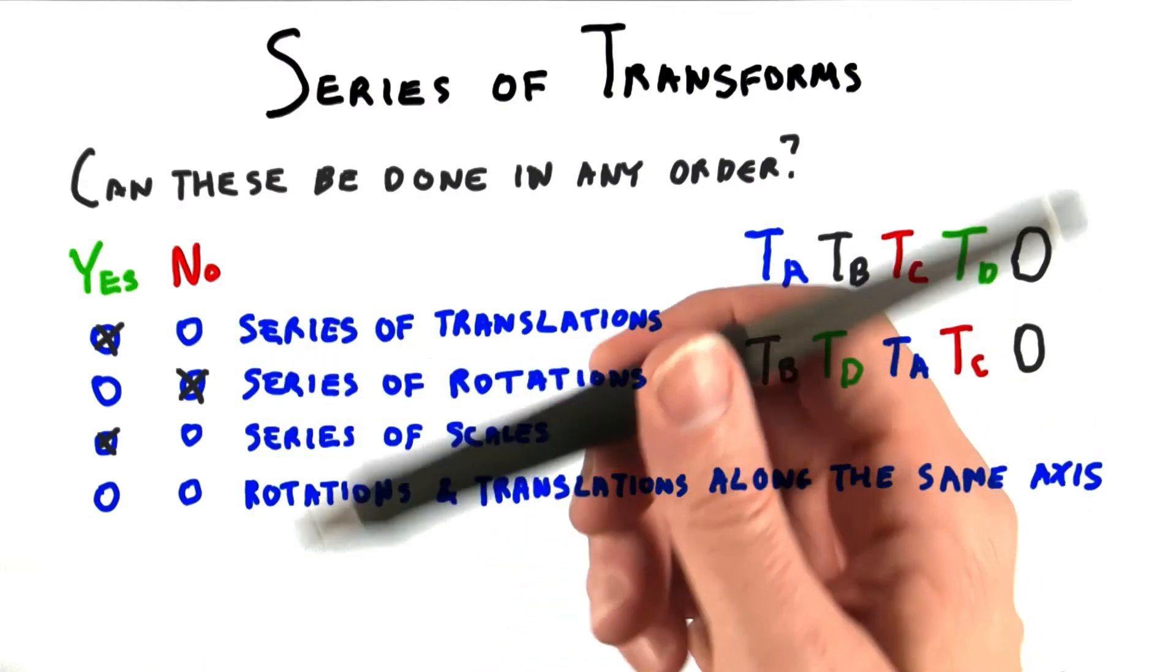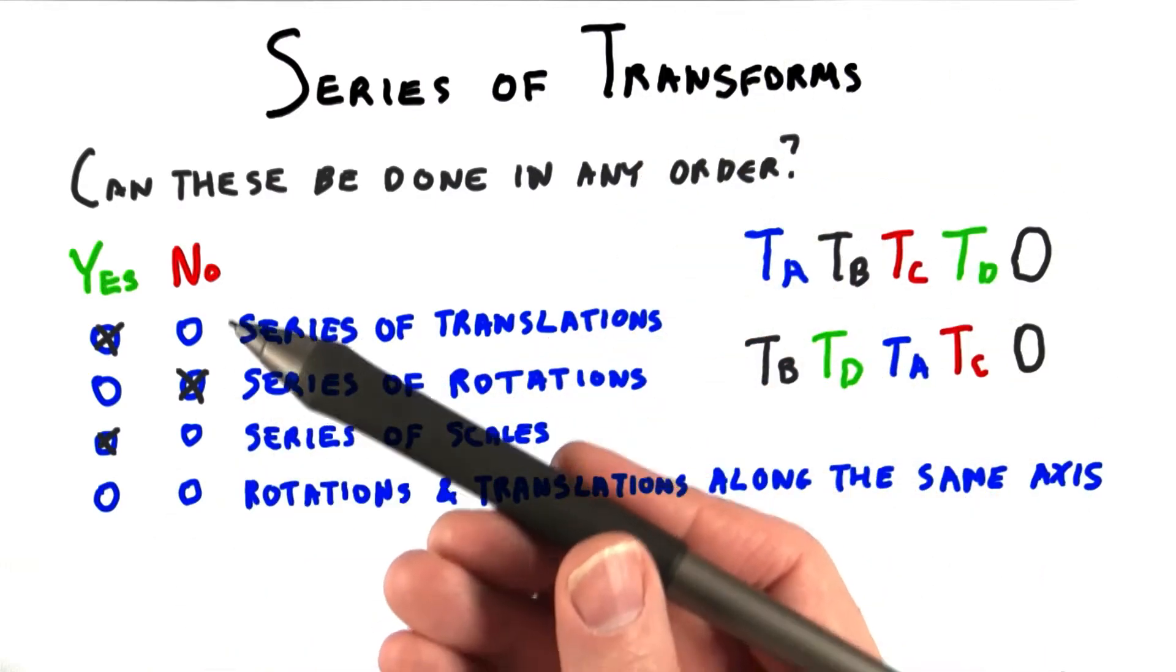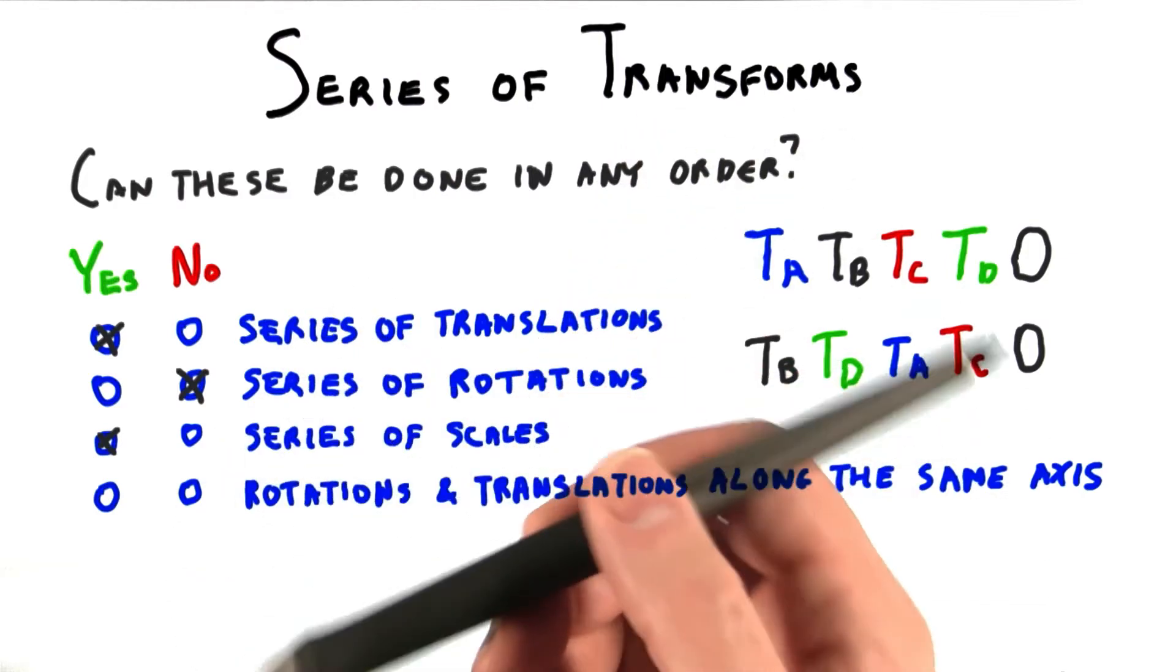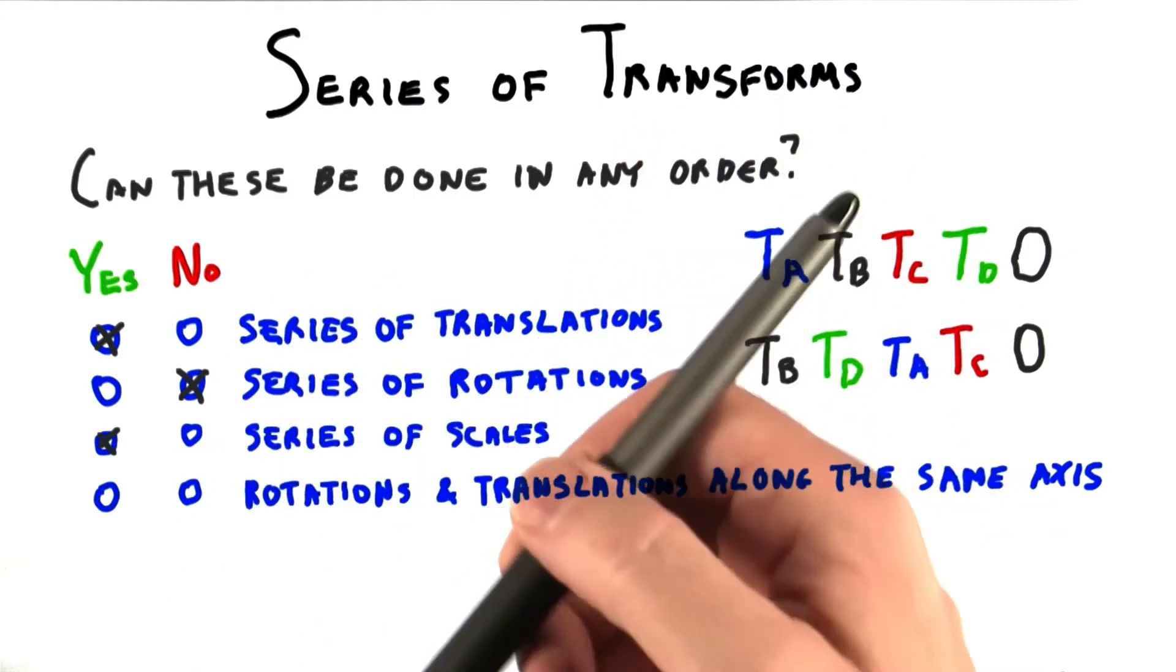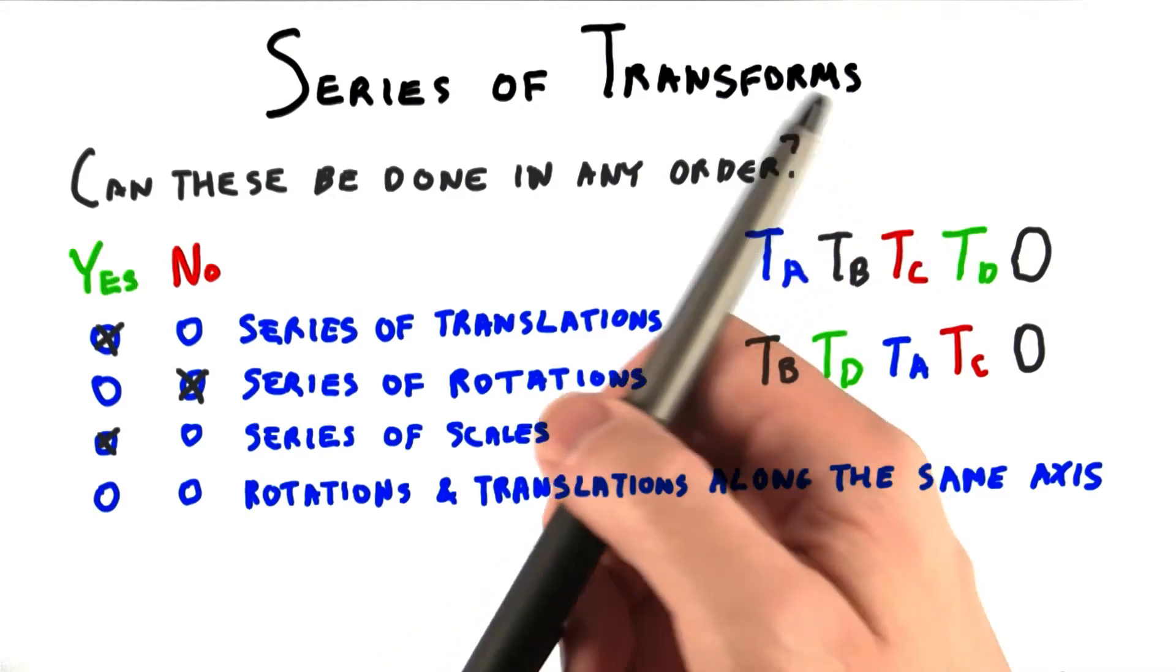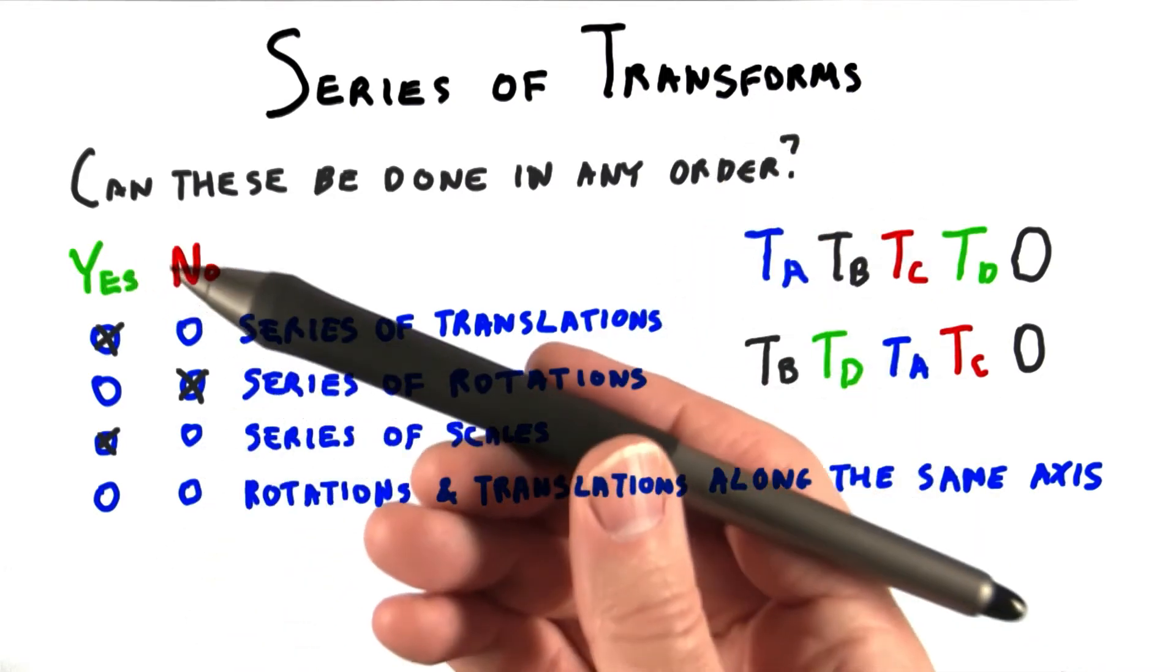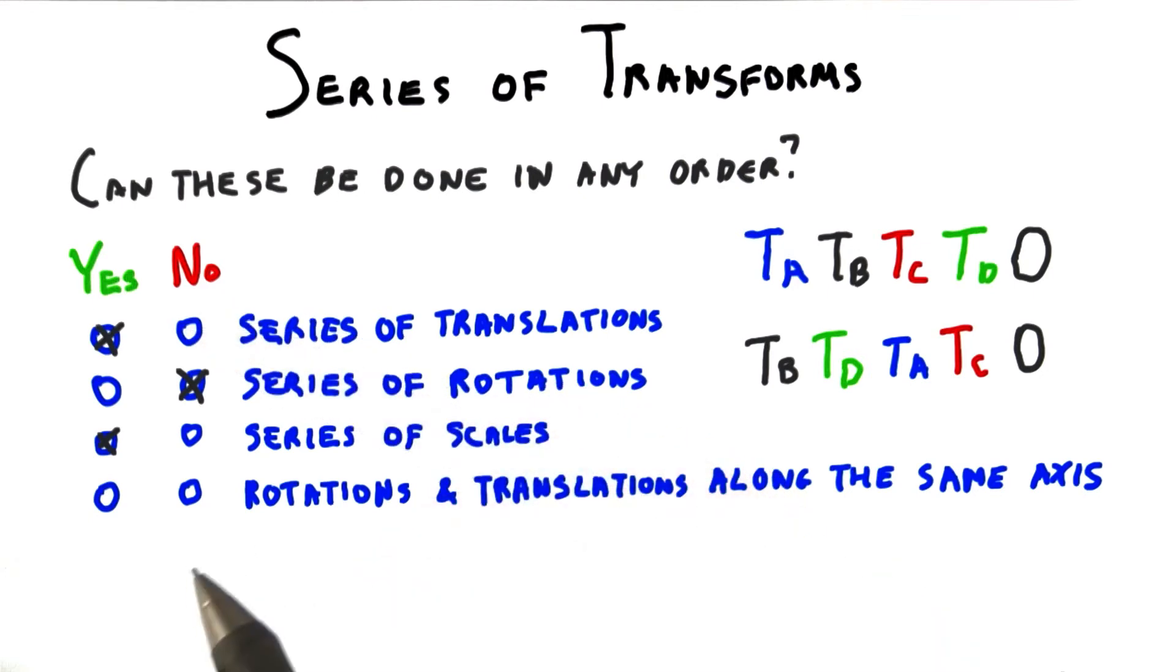For this last question, say you rotate around the y-axis and translate along the same axis. The rotations can be done in any order, since each is just an angle change around the y-axis. The rotation affects the x and z coordinates of any point transformed. Translation affects only the y-coordinates. Since these are independent values, rotations and translations along an axis can be evaluated in any order. So the answer here is yes.